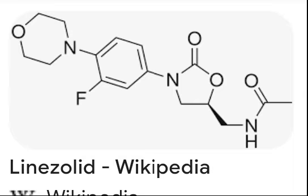Distribution: Linezolid readily distributes to well-perfused tissues with plasma protein binding of about 31%. The volume of distribution (Vd) at steady state in healthy adults is approximately 40 to 50 liters. Linezolid crosses the blood-brain barrier, making it a valuable option for CNS infections caused by MRSA. Studies found that despite lower linezolid concentrations in the lung compared to serum, these concentrations remain above the minimum inhibitory concentration (MIC) and mutant prevention concentration (MPC) values in almost all patients with drug-resistant tuberculosis.